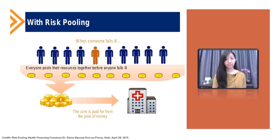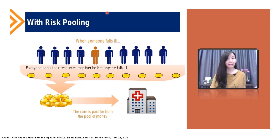Do you know what is risk pooling? Risk pooling is essential to the concept of insurance. A risk pool is one of the forms of risk management commonly practiced by insurance companies. Under the system, insurance companies come together to form a pool which can provide protection against catastrophic risk — in other words, they are sharing risk. For example, in health insurance, everyone pools their resources together before anyone falls ill, so when somebody does fall ill, the care is paid from the pool of money collected earlier.